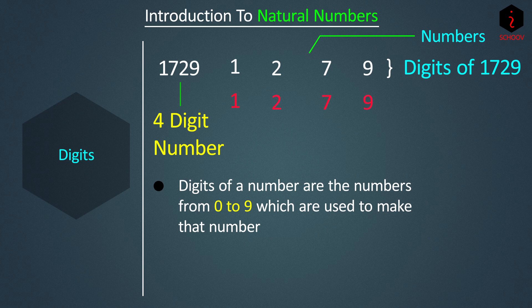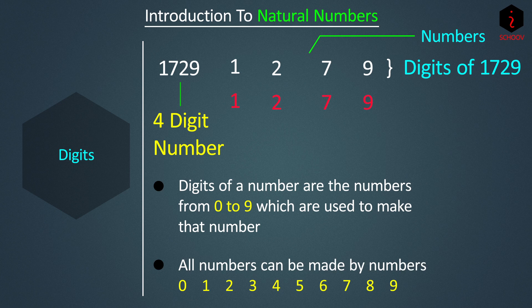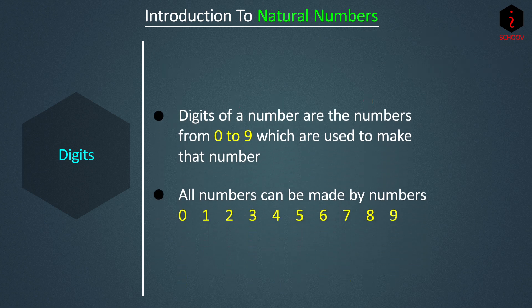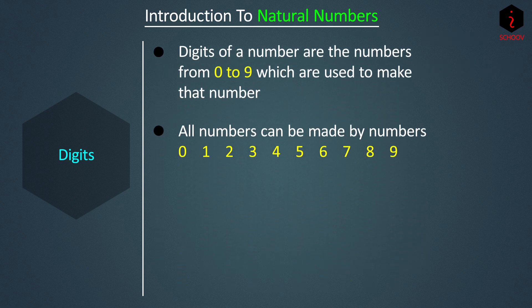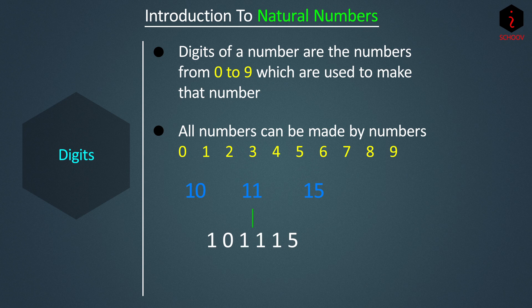In fact, all numbers can be made using just the digits zero through nine. For example, using the numbers 10, 11, and 15, we can make the number 101115. We can see this number is made up of only three digits: 0, 1, and 5. So we need only these ten digits to make any number.